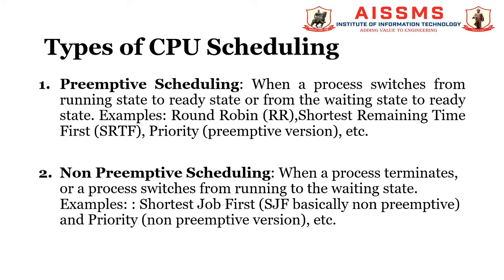In primitive scheduling, when a process switches from running state to ready state, or from waiting state to ready state, the resources — mainly CPU cycles — are allocated to the process for a limited amount of time, then taken away, and the process is placed back in the ready queue if it still has CPU execution time remaining. That process stays in the ready queue till it gets its next chance to execute. Examples include round robin, shortest remaining time first, and priority primitive version.